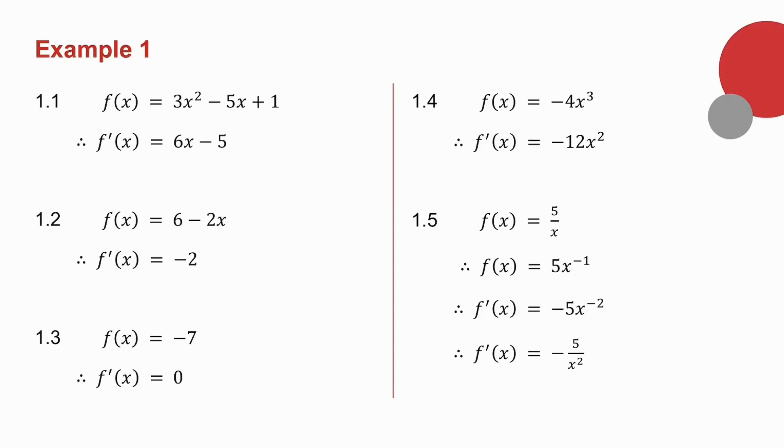1.2. Derivative of a constant is 0. Derivative of minus 2x is just minus 2. 1.3 f of x is a constant, so the derivative is 0. 1.4. 3 times minus 4 is minus 12, and I subtract 1 from the power, so it becomes x to the power 2.